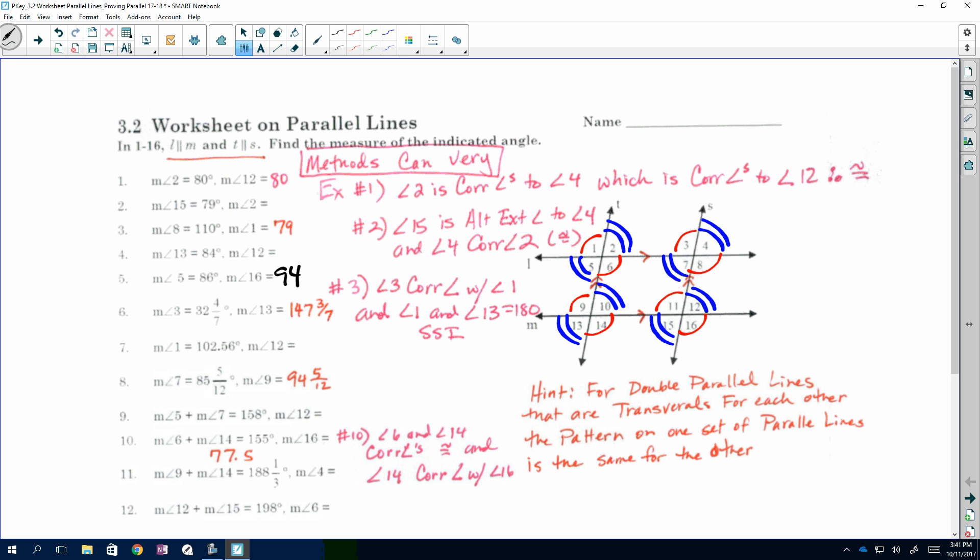For a problem like number 9, if you look at number 9, it says the measure of angle 5 plus 7 is 158. So, I look at 5 and 7. They both have the same double arc. That means they're congruent. So, to find the measure of 1, I would just have to divide it by 2. So, I would say 158 divided by 2. That would give me the measure of each angle. But then, I want to look at the measure of angle 12. Angle 12, if you look, has the same marking. So, that gives me an indicator that it's going to be the same as 5 and 7. So, you should have your same value for each. So, we should know this one was 79, this one was 79. Is that the same arc? So, that would be 79 as well, okay?